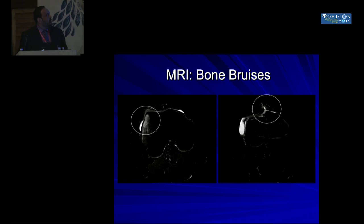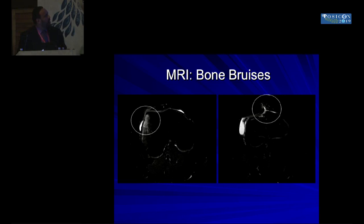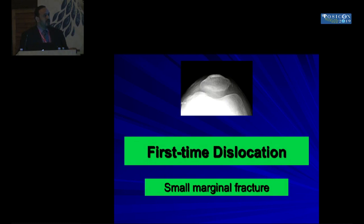On MRI, you can see characteristic bone bruises, and in this patient we don't see any osteochondral fracture. In short, this patient has a first-time patellar dislocation with a small marginal fracture. The treatment options for the panel to consider are: conservative treatment, repair of the avulsed fragment and attached structures, proximal-distal realignment including lateral release, or MPFL reconstruction.